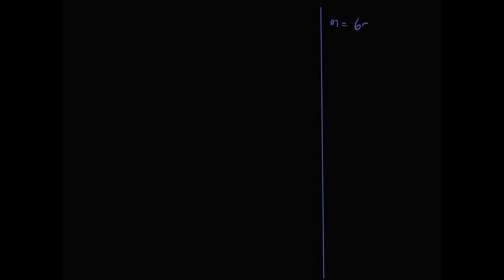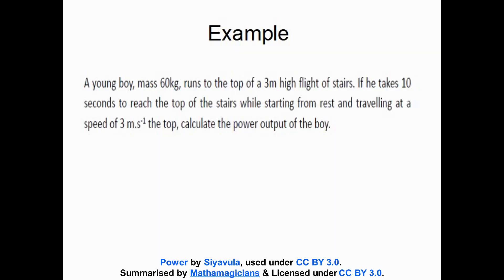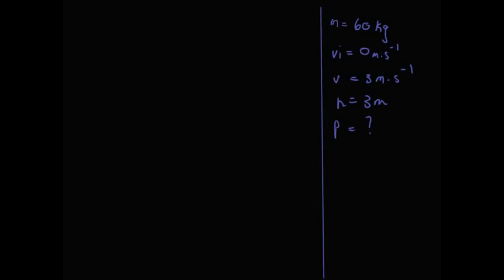The mass of the boy is 60 kg. He started from rest, so initial velocity vi is 0 meters per second. He's traveling at 3 meters per second, so v equals 3 m/s. The height is equal to 3 meters, and the time taken is 10 seconds. We need to calculate the power of the boy, and the formula for power is P equals W over T.